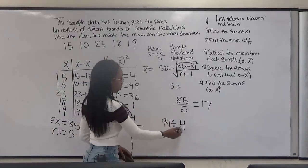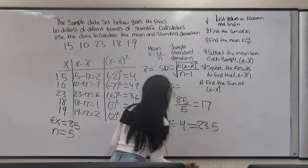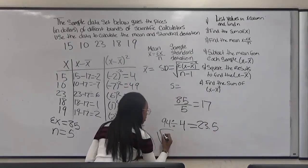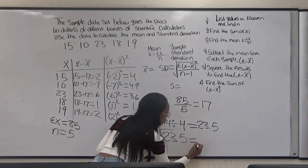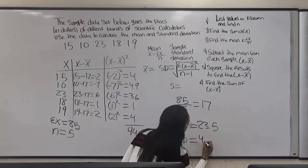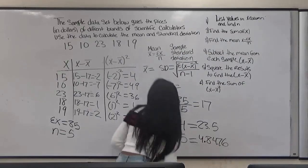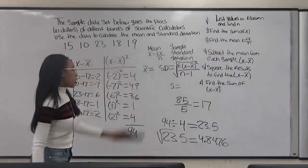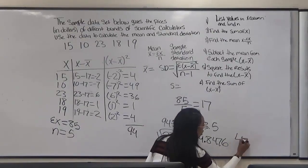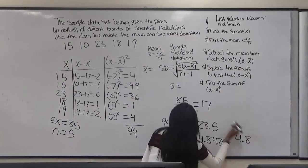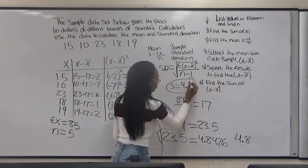So 94 divided by 4 gives us 23.5. Now we're going to take the 23.5 and we're going to square root it. When you square root that you're going to get 4.8476. Because we're working with whole numbers you want to round it to the nearest tenth, which our answer would be 4.8. And that is our final answer.